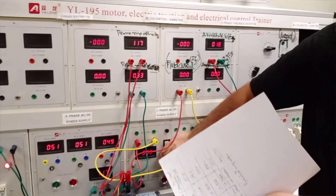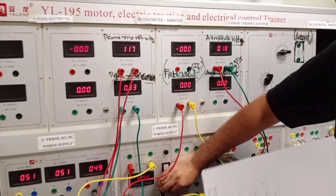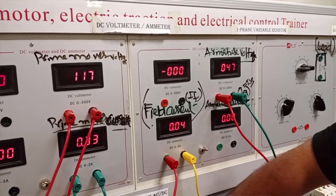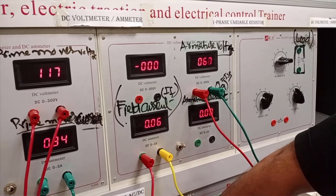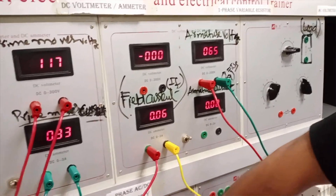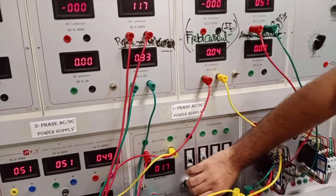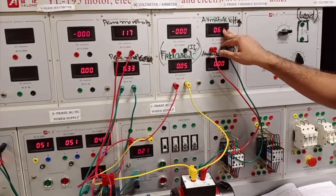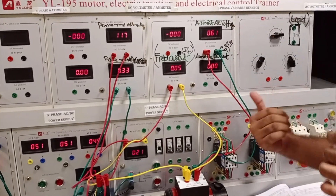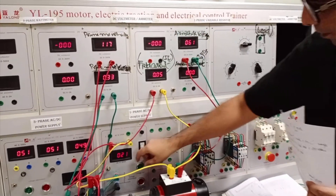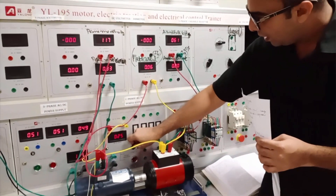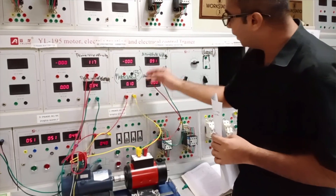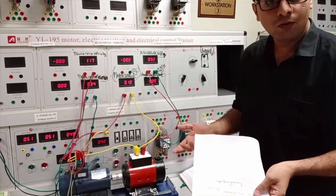The armature voltage increases because the lines of flux cuts are at maximum. At approximately 20 V field excitation we obtain about 61 V armature voltage. At 40 V field excitation we obtain 91 V armature voltage.